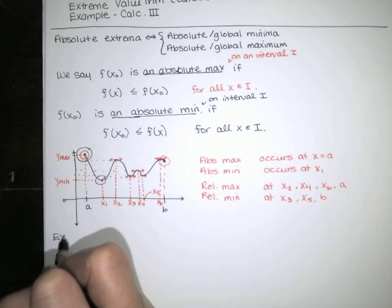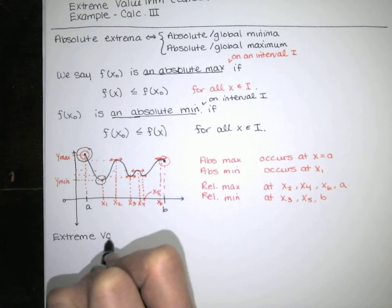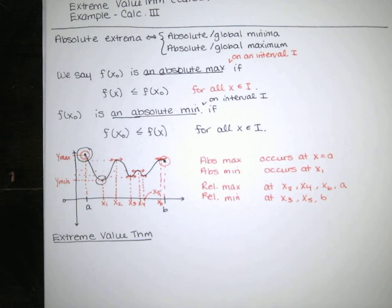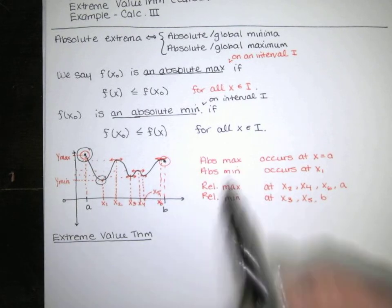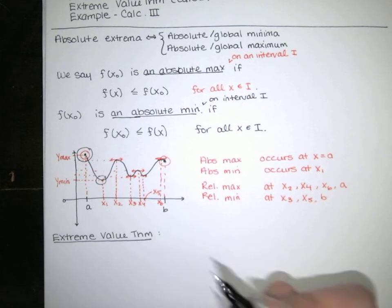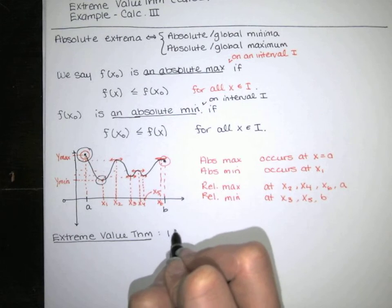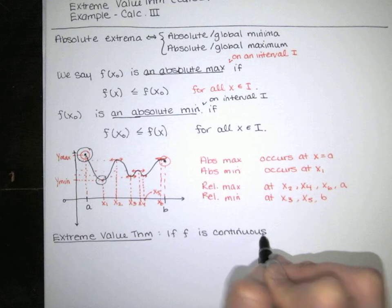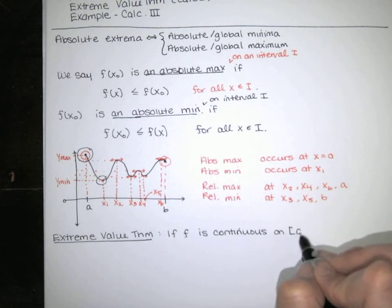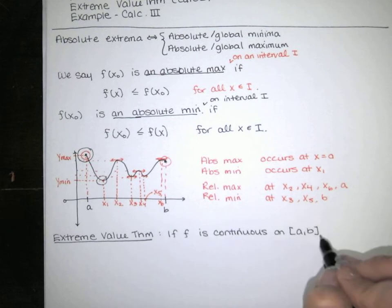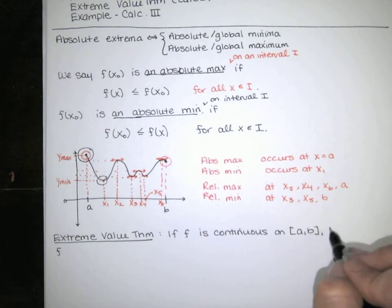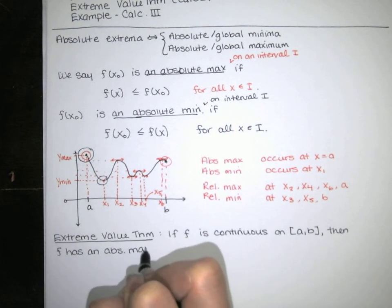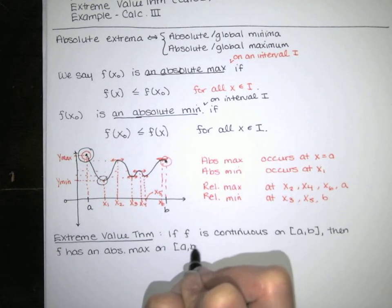In calculus 1, you learned something called the extreme value theorem. If you have a function on an interval, you're not always guaranteed to have an absolute max or an absolute min. The extreme value theorem says that if f is continuous on a closed interval from a to b — including the endpoints — then we're guaranteed that f has an absolute max and an absolute min on that interval.